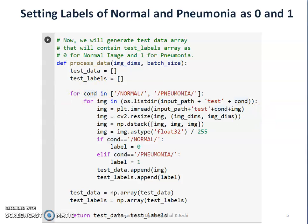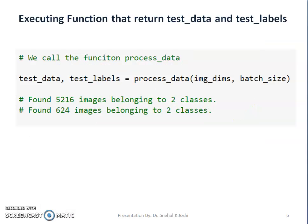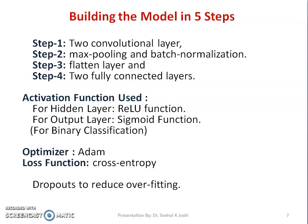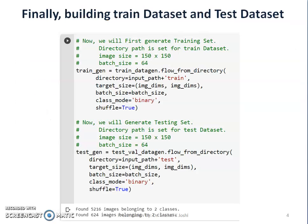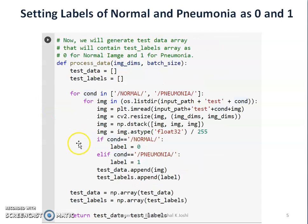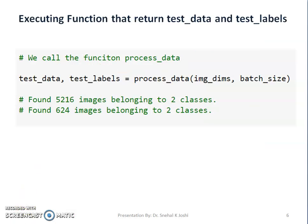We need to convert the known output of the test image dataset as binary. In this function, we have used a for loop that fetches all images from normal and pneumonia folders, then resizes them and labels them as 0 or 1 depending on whether it is from the normal or pneumonia folder. Our function returns test data containing images and test labels containing 0 or 1 corresponding to those images. Now we call the function process_data, passing image dimension 150 and batch size 64.